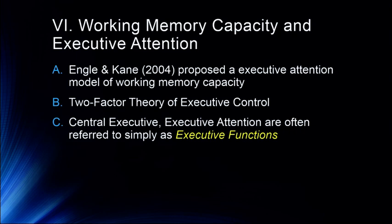That's a quick introduction to the two-factor theory of executive control — we'll revisit it when we start talking about working memory capacity. As you may have noticed in the field of cognition, there are arguments about terminology. Engel and Kane make a great argument for calling this executive attention; some people call it central executive. I think it's simplest to call it all executive functions, and that's what we'll do from here on out — whether it's central executive or executive attention. I'm more interested in how it works and its implications than what to call it. We'll be talking about working memory capacity in our next lecture.